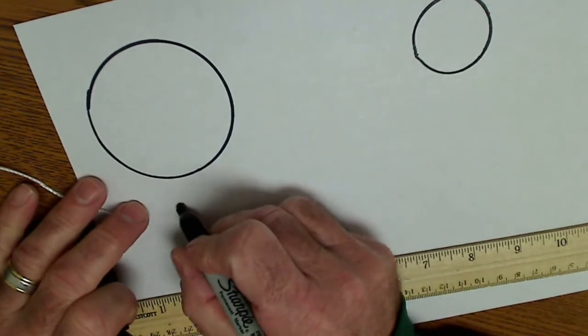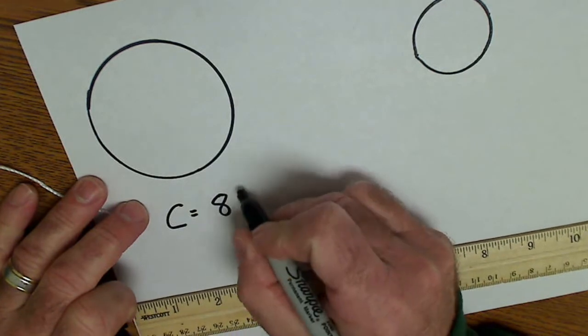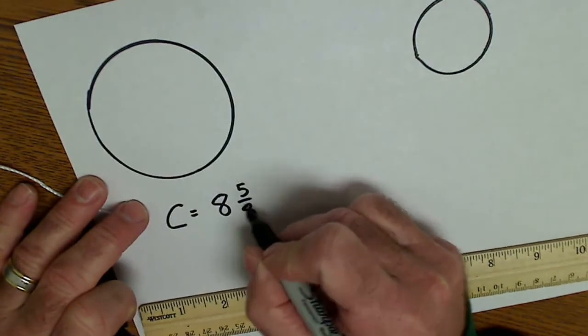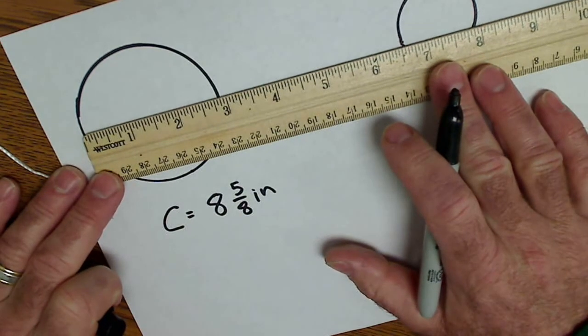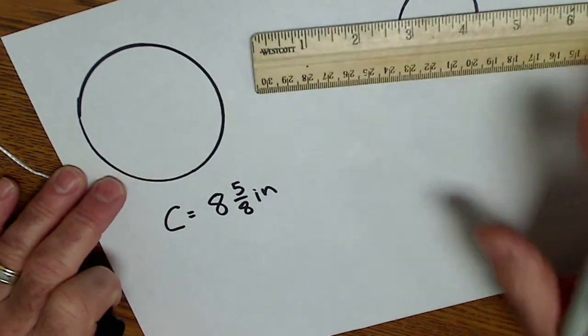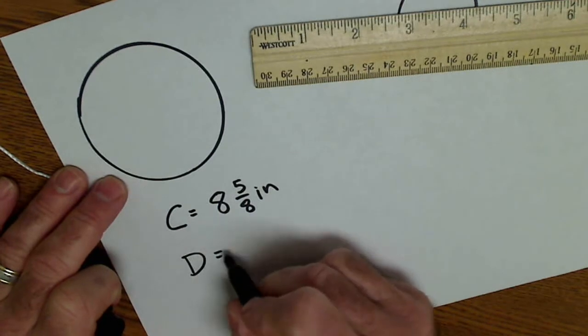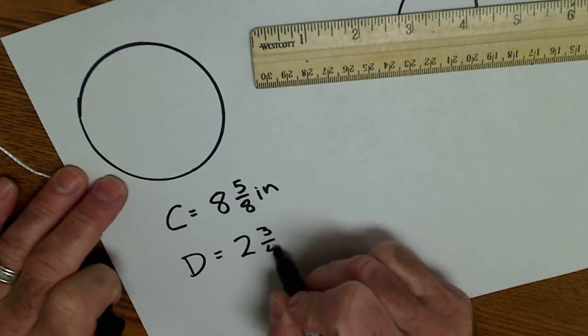So the circumference of this circle is 8 5/8ths of an inch. I'll find its diameter, which is about 2 3/4ths of an inch. The diameter is 2 3/4ths of an inch.